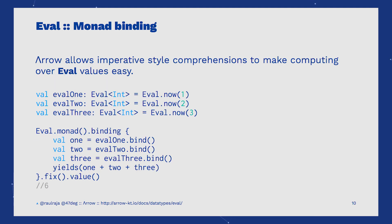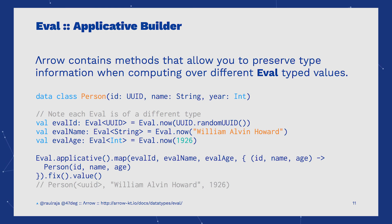Arrow provides imperative-style monad comprehensions to compute over different Eval values. With the applicative builder, we're able to compute over different Eval values, preserving the return type information.